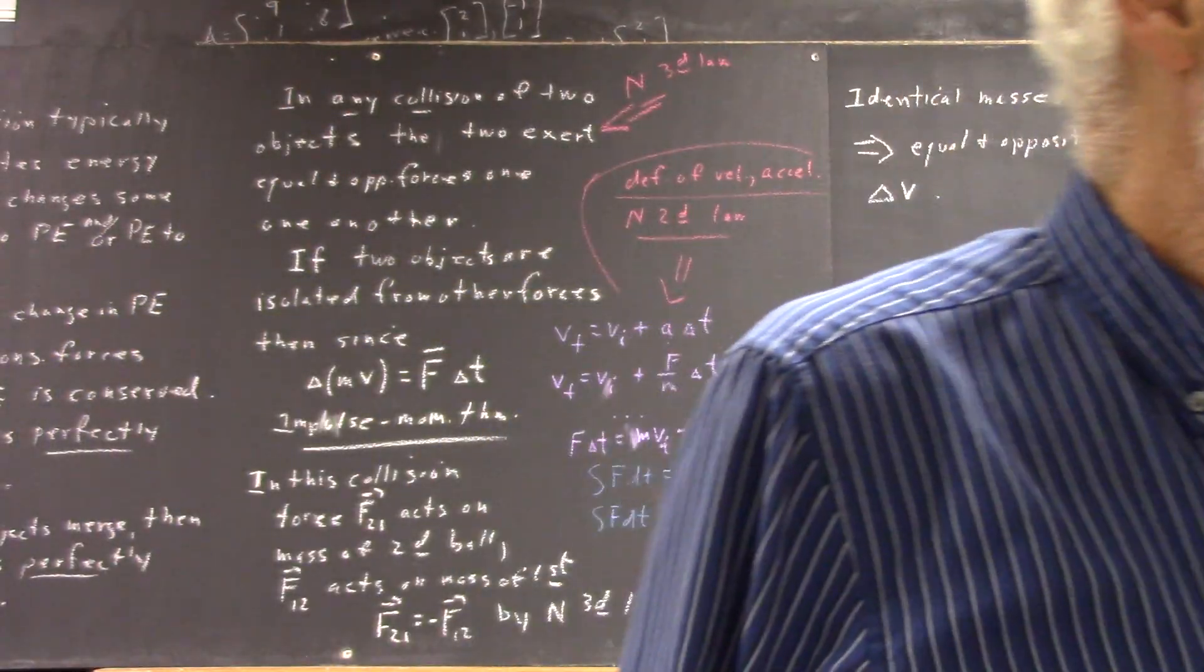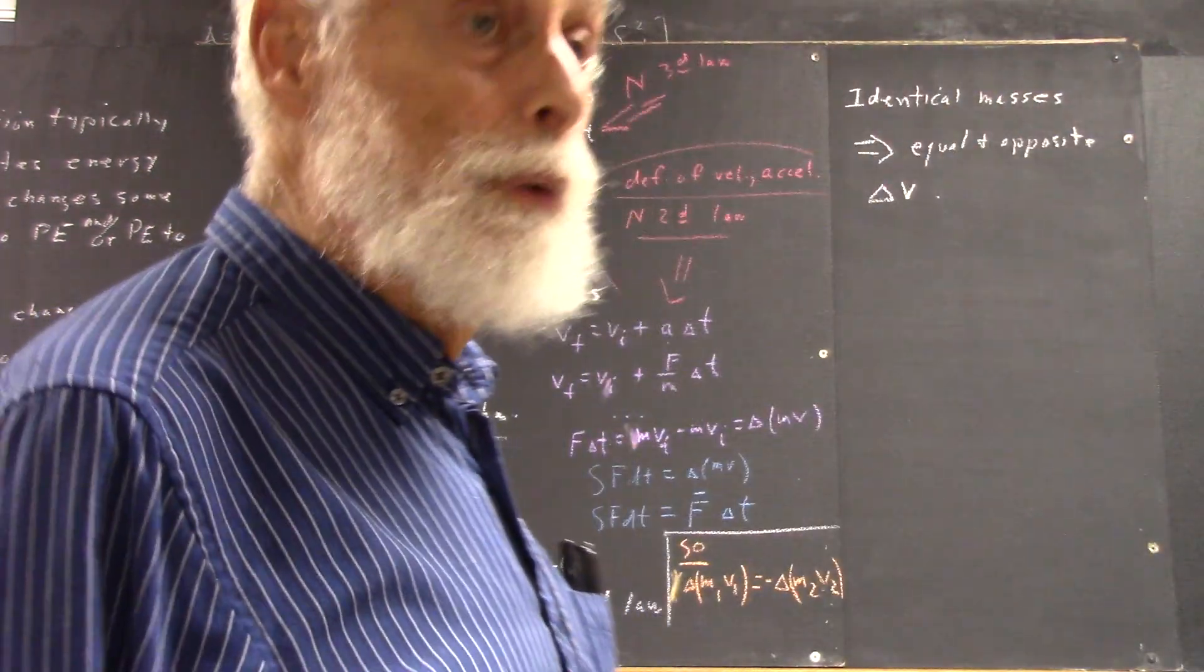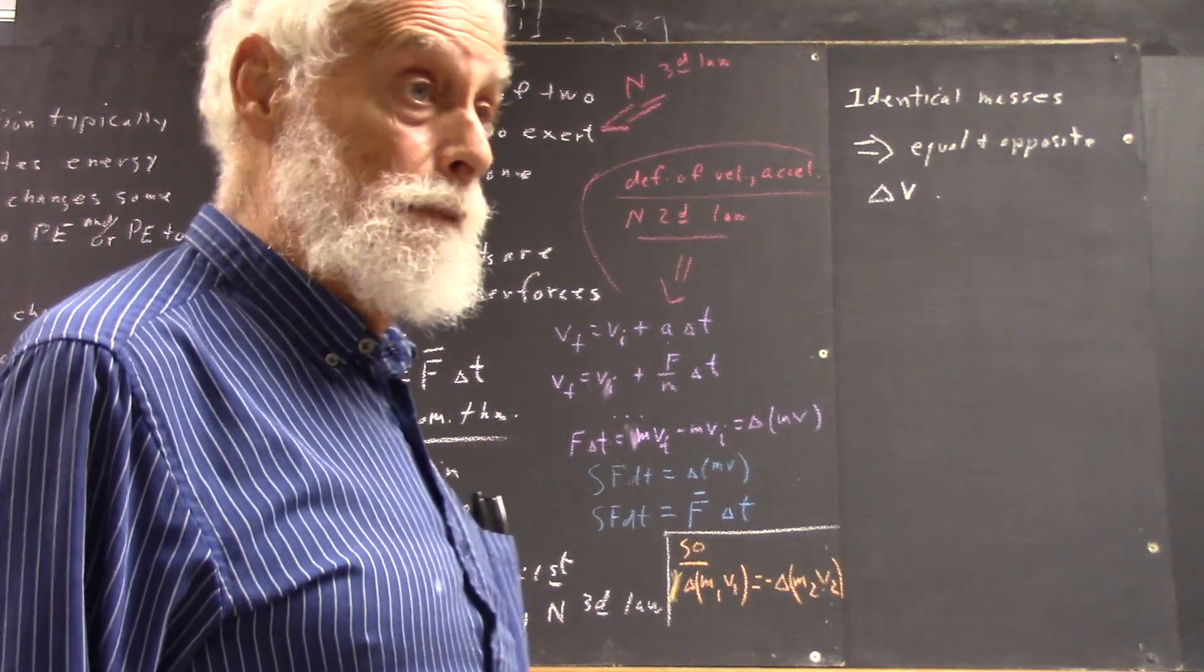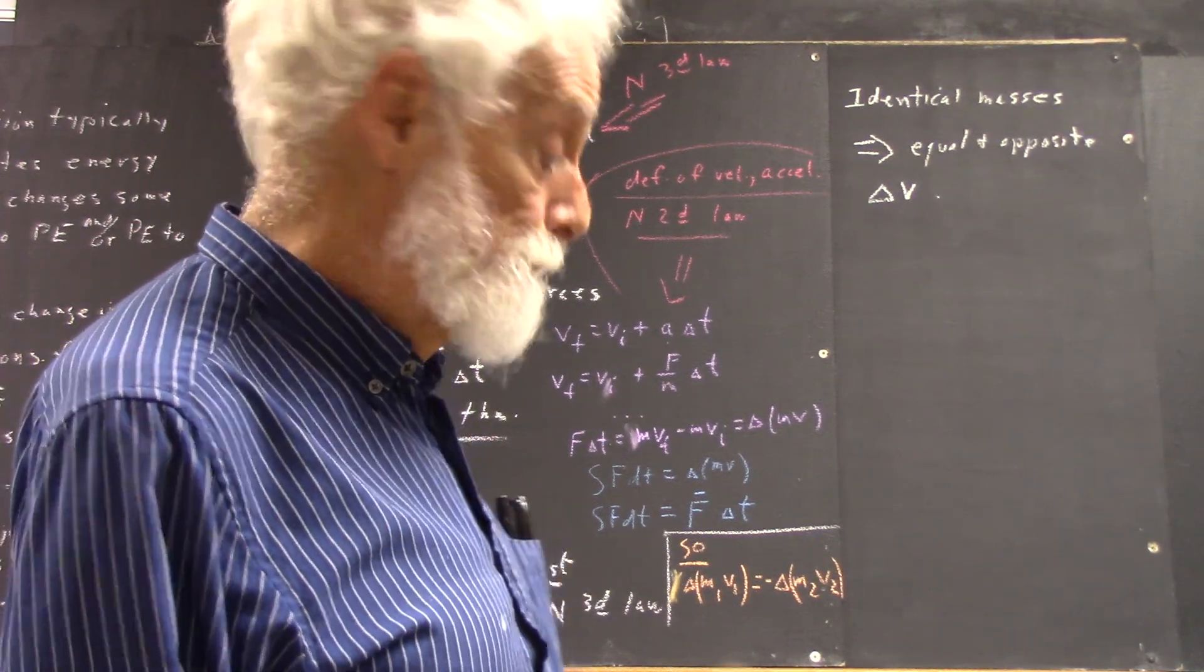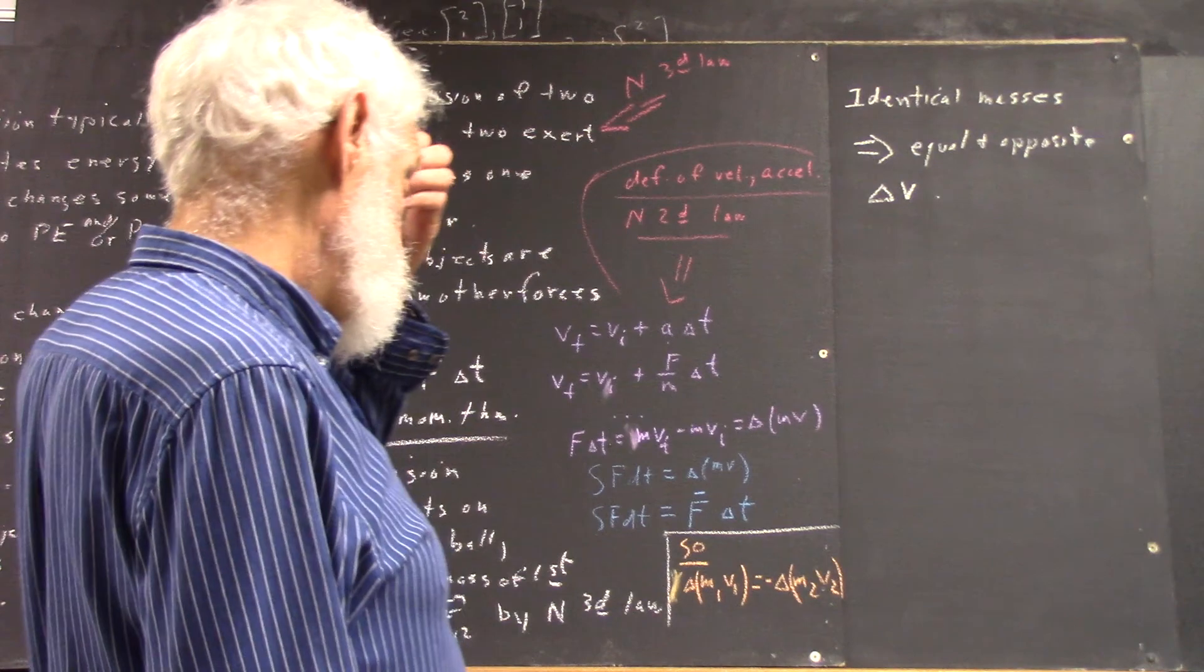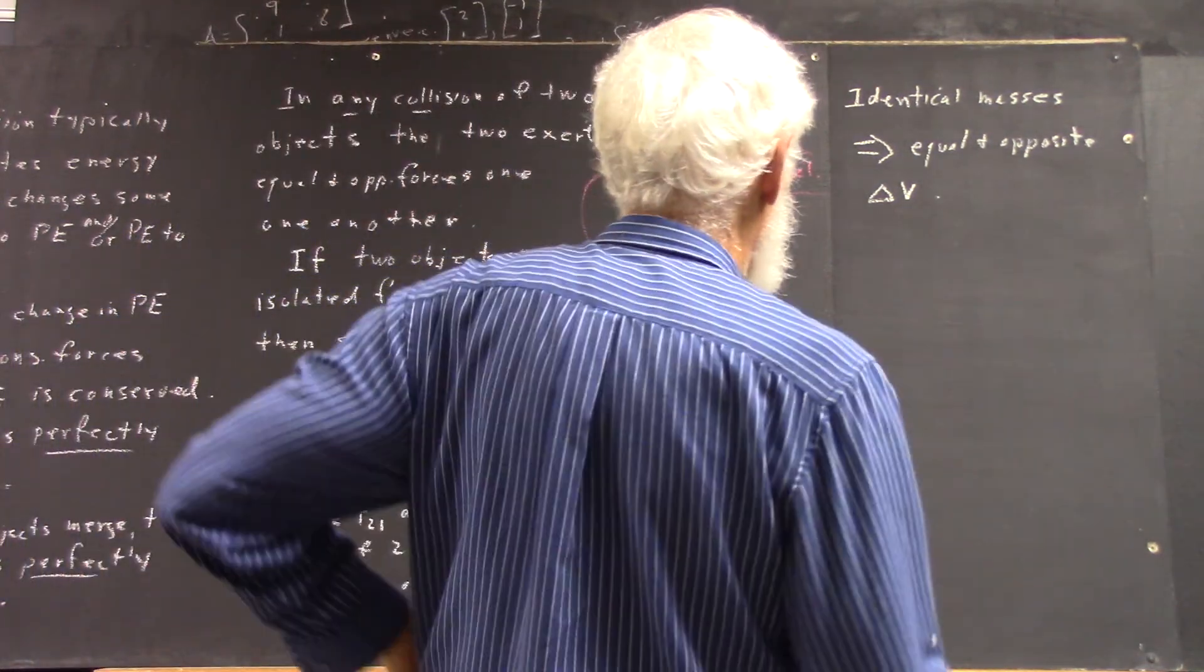Identical masses imply equal and opposite changes in velocity. Now, in this experiment, that's not what we get. In the experiment, you have, like...